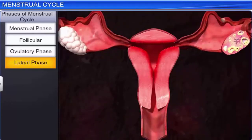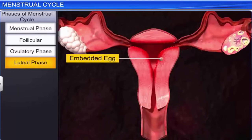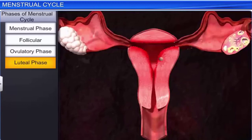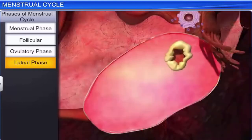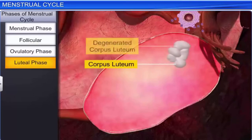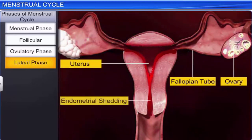During the ovulatory phase, the Graafian follicle ruptures to release an ovum into the pelvic cavity. The luteal or secretory phase (days 16–28) sees the transformation of the remaining Graafian follicle into the corpus luteum. The endometrium thickens and blood vessels become coiled and enlarged. A fertilized egg gets embedded in the endometrium, while the corpus luteum secretes progesterone to maintain the endometrium and support embryo growth. Without fertilization, the corpus luteum degenerates, triggering menstruation and a new cycle.